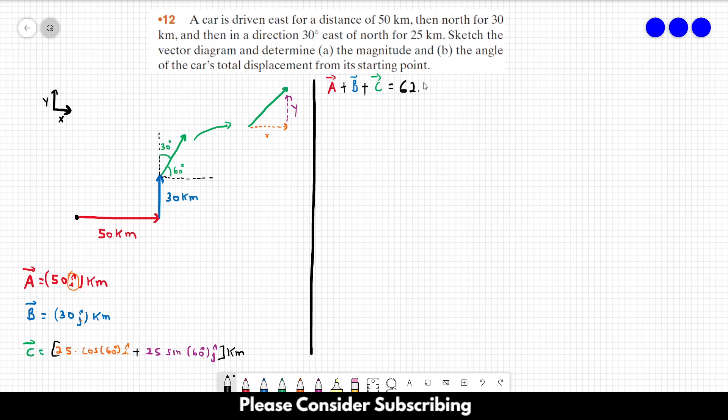62.5 in the i direction plus 51.7 in the j direction. Don't forget to include the unit, which is kilometers. And let's say this vector over here is vector R.